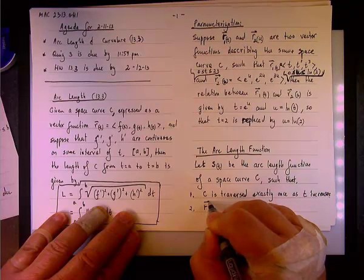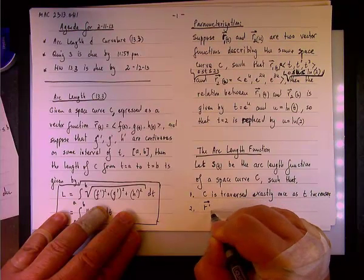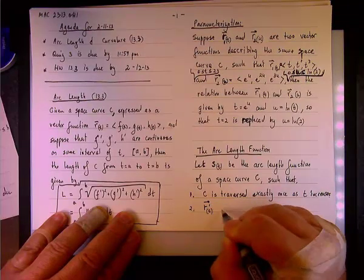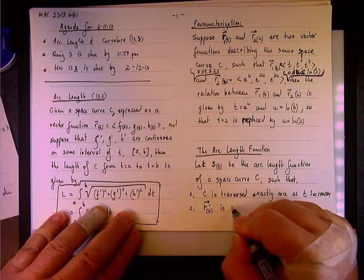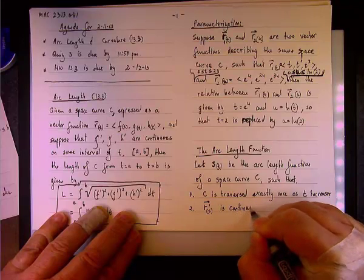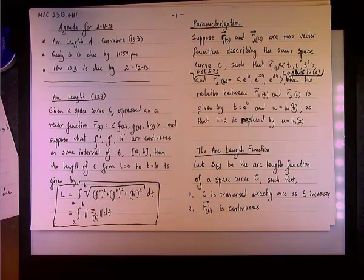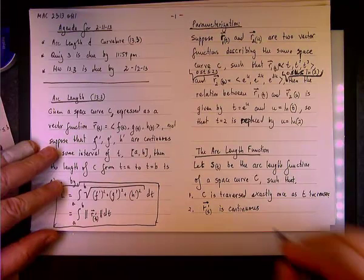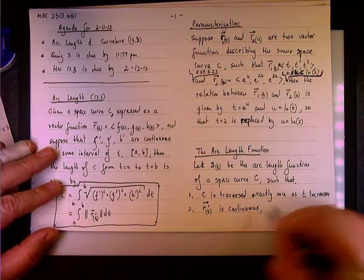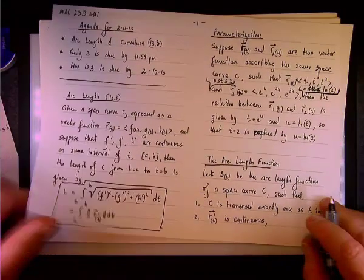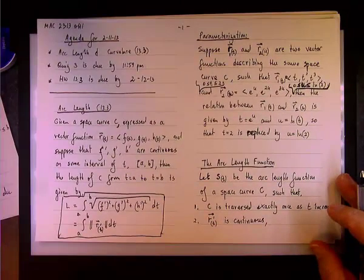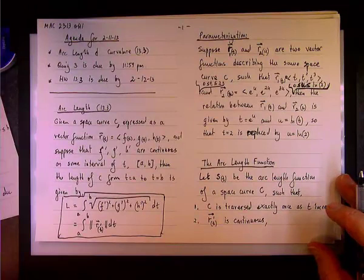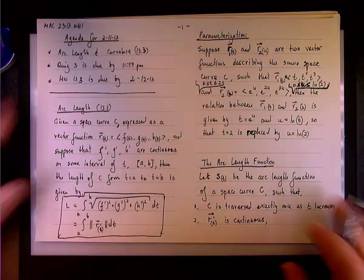The second condition is that we have continuity. So, we're going to require that the vector that describes the curve is continuous. I'm sorry, the derivative vector function is continuous. Otherwise, we'll have some weird results. So, this is the preliminary to the definition of the arc length function.